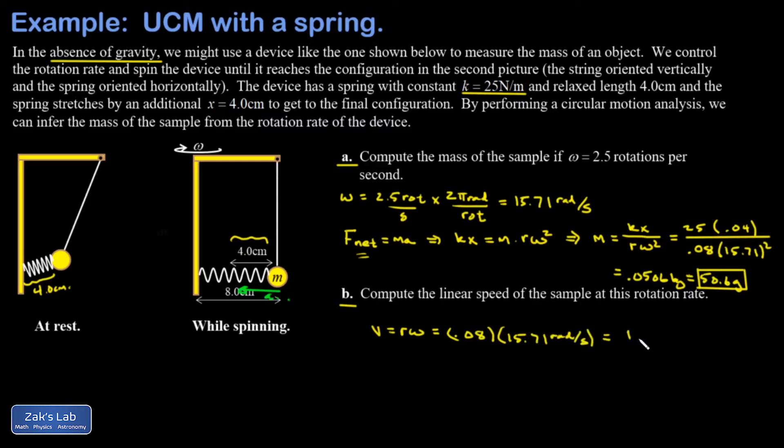One final point here: we used a equals r omega squared for the centripetal acceleration in this problem because it was the fastest way to answer part a. But if you wanted to use that centripetal acceleration is v² over r, you could have solved part b first and got that v of 1.26 and plugged it in there and you'll get the same answer for the mass.